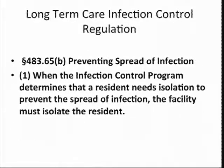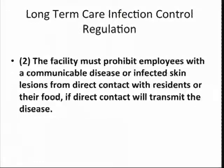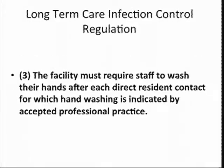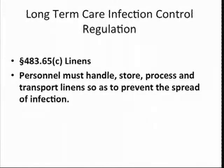Preventing spread of infection: when the infection control program determines that a resident needs isolation to prevent the spread of infection, the facility must isolate the resident. The facility must prohibit employees with a communicable disease or infected skin lesion from direct contact with residents or their food if direct contact will transmit the disease. The facility must require staff to wash their hands with each direct resident contact for which hand washing is indicated by accepted professional practice. Personnel must handle, store, process, and transport linens so as to prevent the spread of infection.